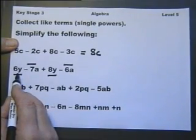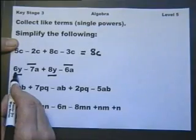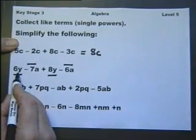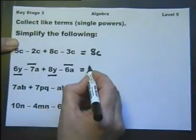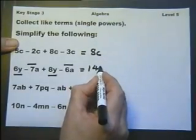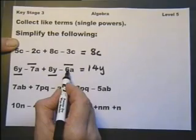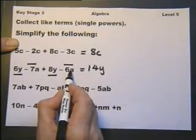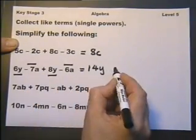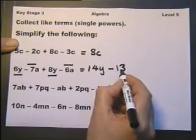Now, let's look at the Y's. We've got 8Y there and 6Y there, which is 14Y. We've got minus 7A and some more minuses there. Minus 6A. Minus 7A and minus 6A is minus 13A altogether.